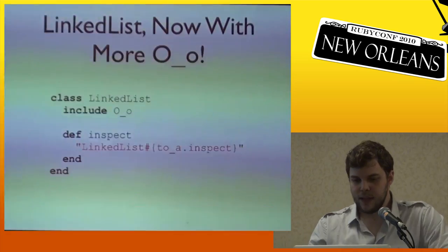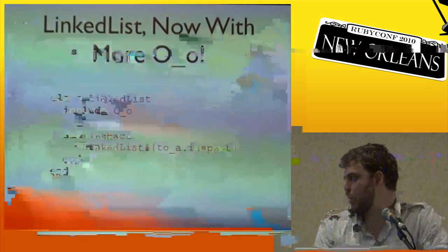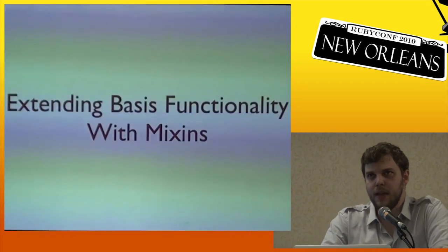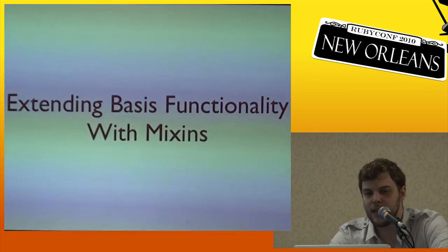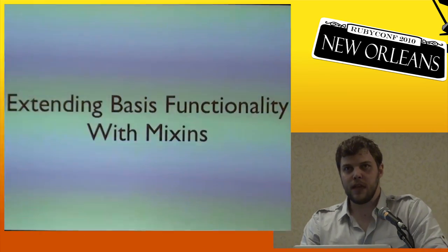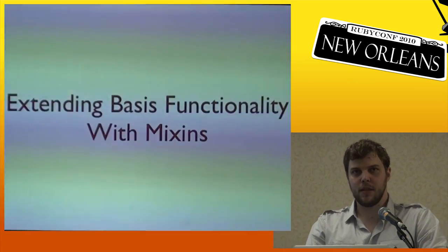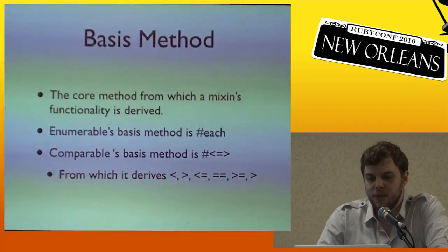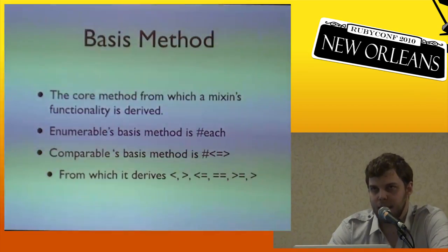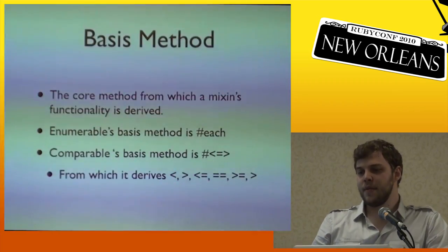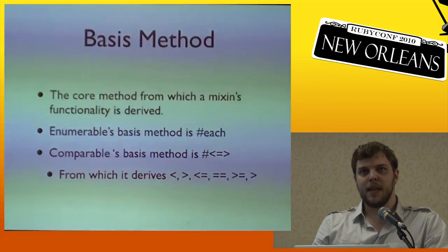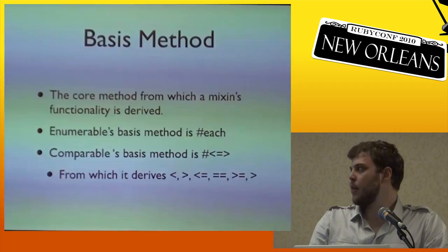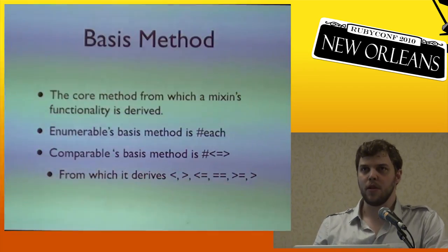Now that we have our linked list, we can include our own Enumerable module and keep the same `to_a` in our inspect and it will still work. A basis method is a core method from which a mixin's functionality is derived. Enumerable's basis method is each — any object that has an each method conforming to the semantics we discussed can include Enumerable and it will just work.